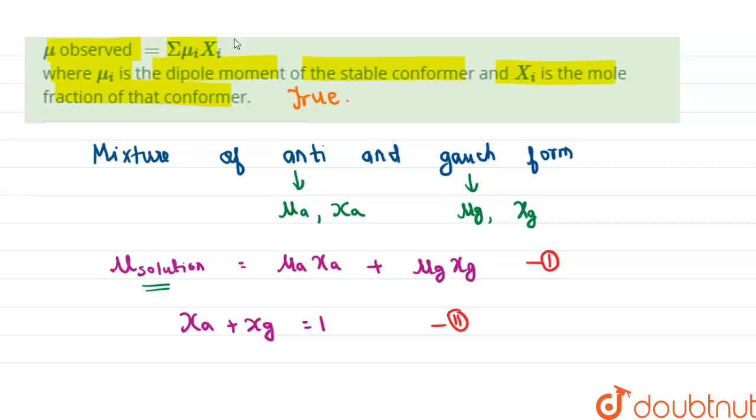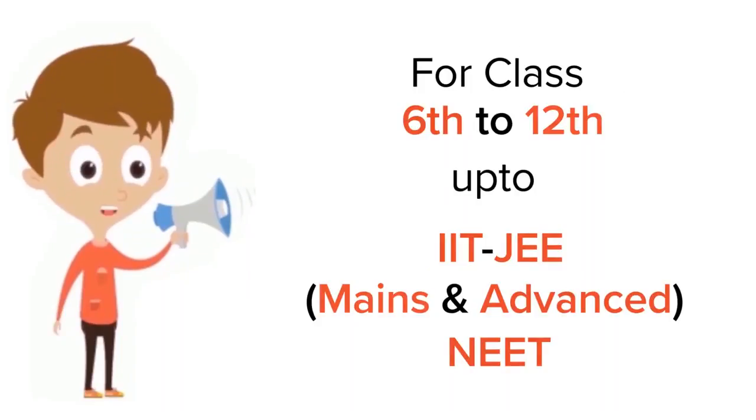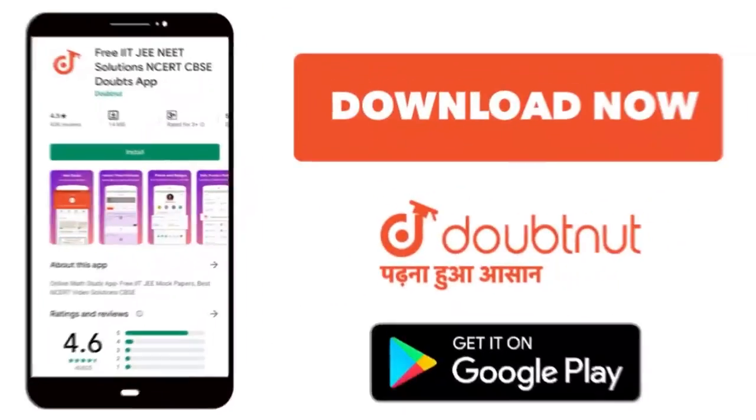For classes 6 to 12, up to IIT-JEE Mains and Advanced and NEET level, trusted by more than 5 crore students. Download the Doubtnet app today.